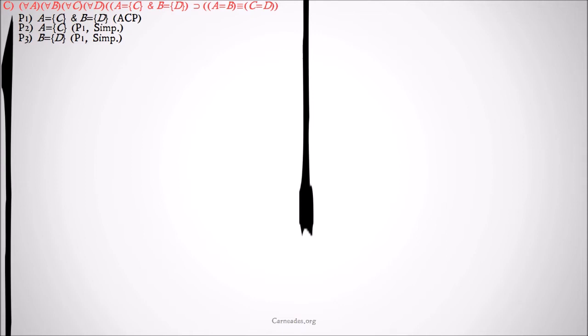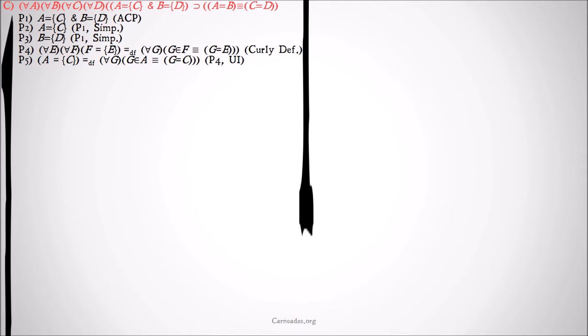First we can simplify: A equals the set of C, B equals the set of D. Then we're going to apply our definitions of the curly brackets — this is really the only way we have to eliminate those curly brackets and work with these concepts in purely logical terms. We only need the single version: E from the list, F in place of B, and G in place of C. We universally instantiate to A and C, then again to B and D, running these two in parallel.